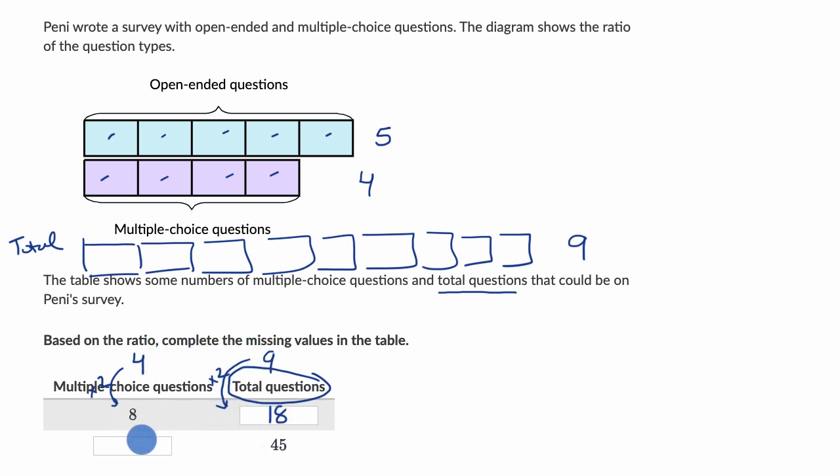And now in the second row, they give us the actual number of total questions. Well, that is nine goes into 45 five times. That's five sets of nine. So you're going to have five sets of four multiple choice questions. So five times four is 20. And we're done.